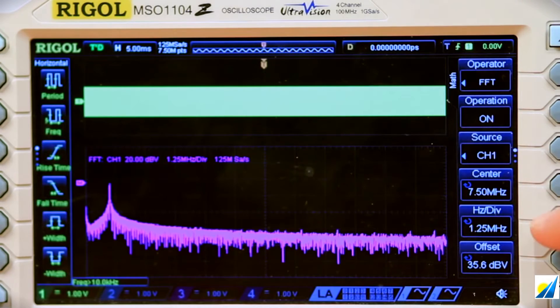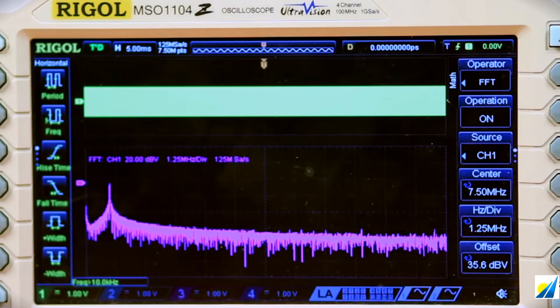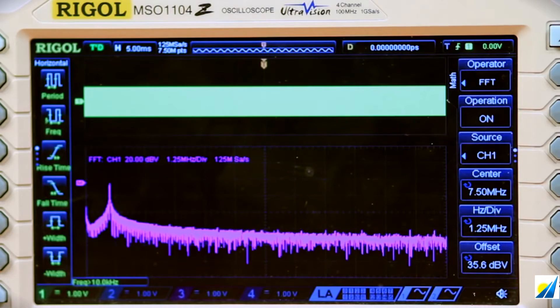So our current scale is 1.25 megahertz per division, with 7.5 megahertz in the center. So as we can see, that's a pretty clean sine wave.